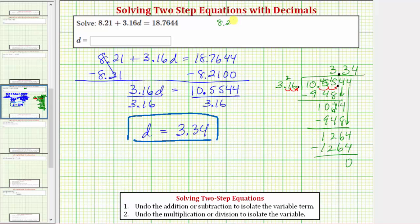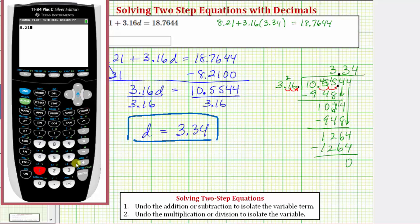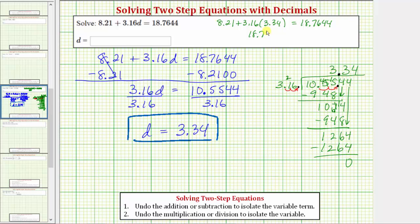Let's evaluate the left side of the equation using a calculator. So 8.21 plus 3.16 times 3.34 is equal to 18.7644. And therefore our solution is correct. The left side is equal to 18.7644. And so is the right side. This is our check to verify our solution is correct.